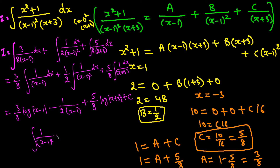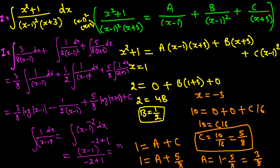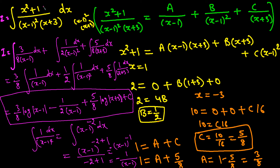The integration of 1/(x minus 1)² can be written as (x minus 1)^(−2), and using the power rule — integral of x^n is x^(n+1)/(n+1) — this becomes (x minus 1)^(−1)/(−1), which equals −1/(x minus 1). With the 1/2 already there, the middle term contributes −1/(2(x minus 1)). So the full answer is (3/8)log|x minus 1| minus 1/(2(x minus 1)) plus (5/8)log|x plus 3| plus C.